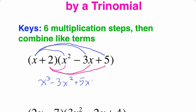Switching to pink, 2 times x squared is positive 2x squared. 2 times negative 3x is negative 6x. And lastly, 2 times 5 is plus 10.